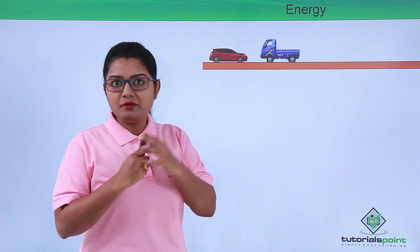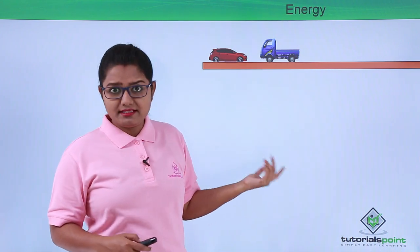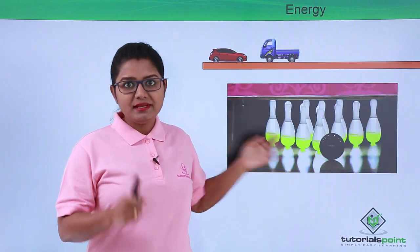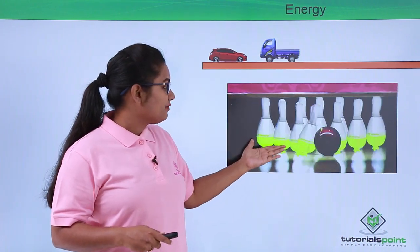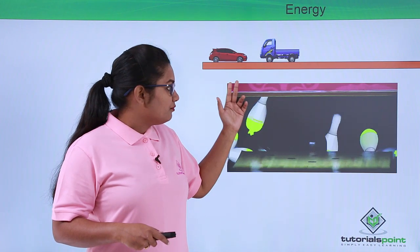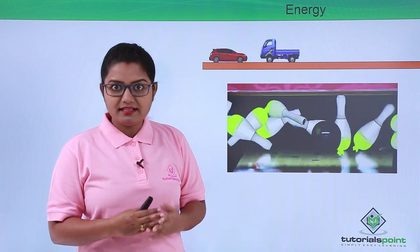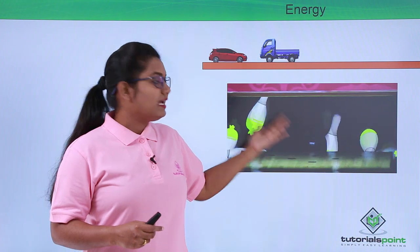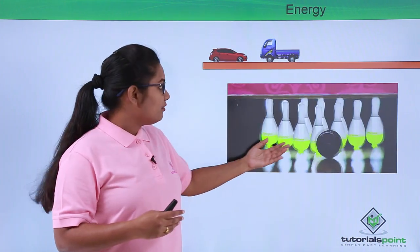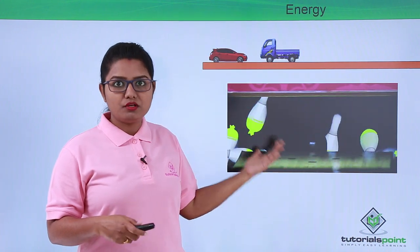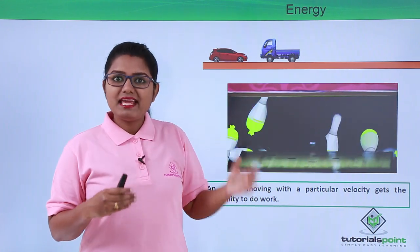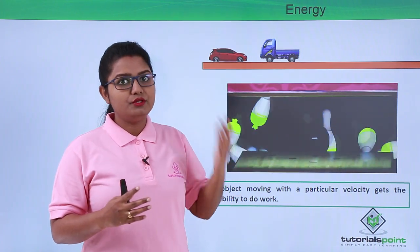We can conclude that a moving object gets the capability of doing work. For a better understanding, let's look at another example — a bowling game. When the bowling ball hits the pins, the pins are thrown away from their places. The bowling ball, moving with a certain velocity, displaces the pins. So from this example too, we can conclude that an object moving with a certain velocity has the capability of doing work.